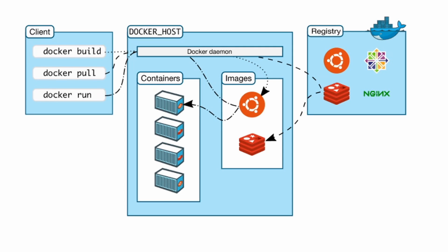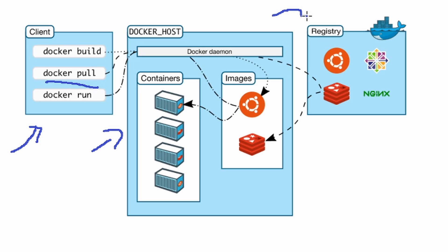Hello everyone, and welcome back to my series on Docker. Just to recap our last video: we got the Docker client installed as well as the Docker server, and we ran our first few Docker commands. The first one being the Docker pull command, which told the server to speak to Docker Hub — the registry for all the images — and it pulled down the Ubuntu image and stored it locally. After that, we used it to create our very first container.